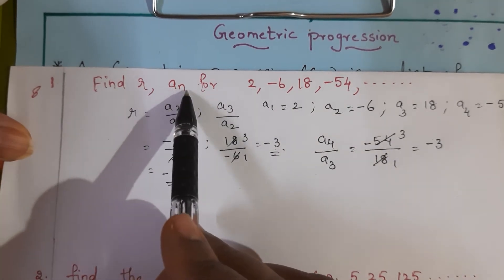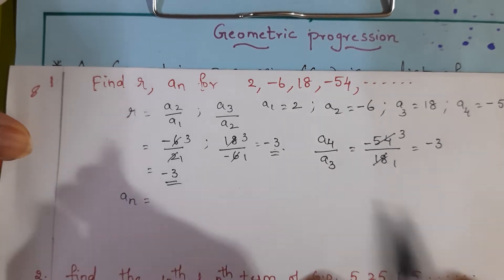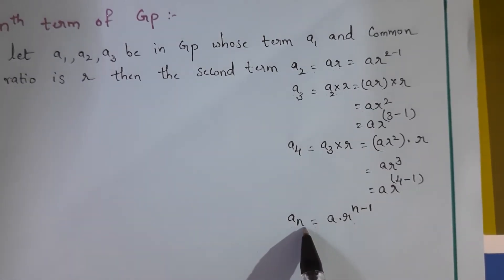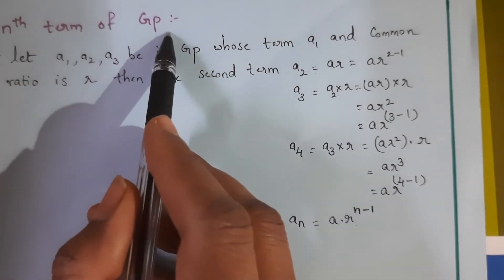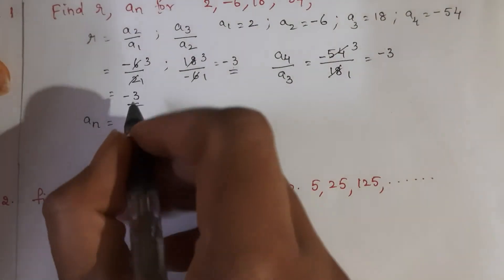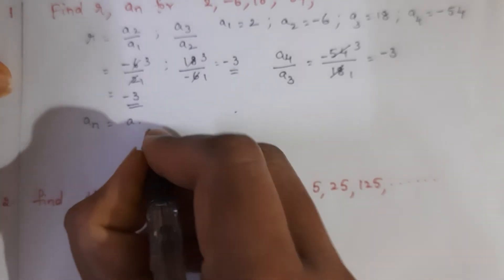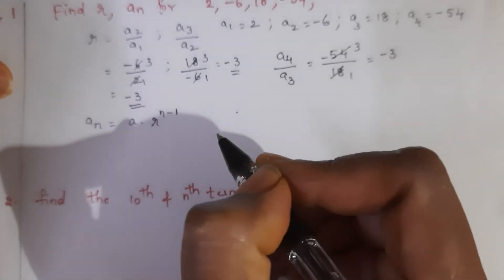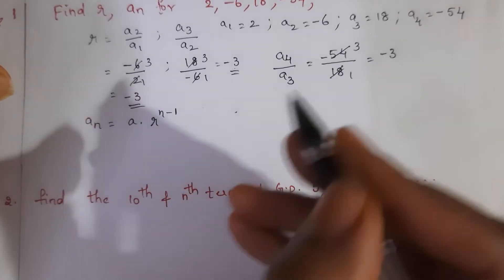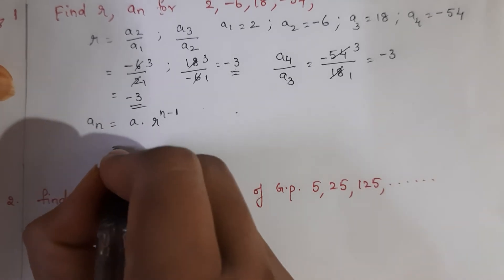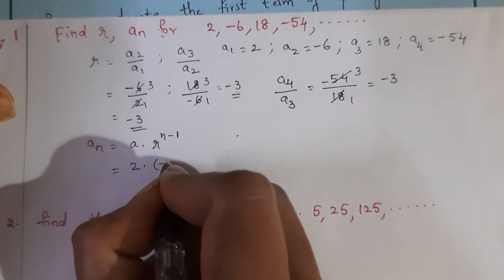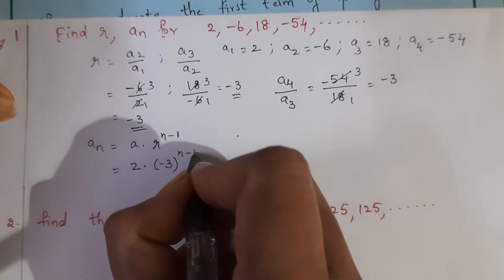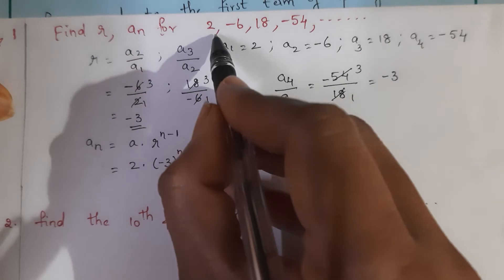Next, we have to find out the nth term, that is An. The formula is An is equal to A into R power n minus 1. This is the nth term of a geometric progression. Here A is the first term and R is the common ratio. So An is equal to 2 into minus 3 power n minus 1. This is the nth term of this list of numbers.